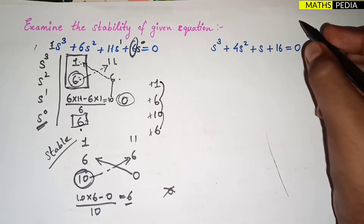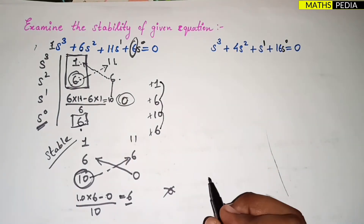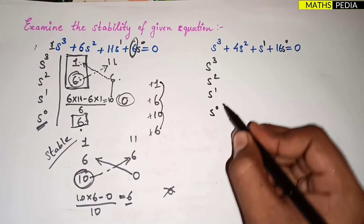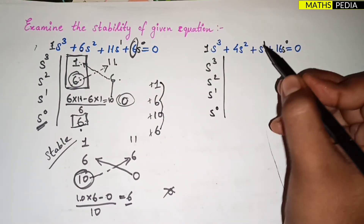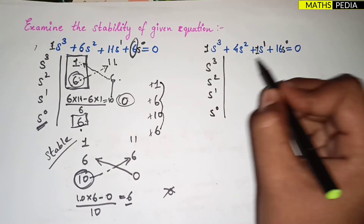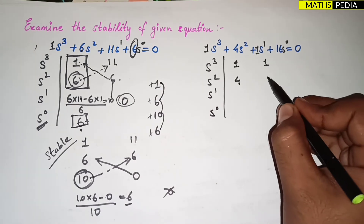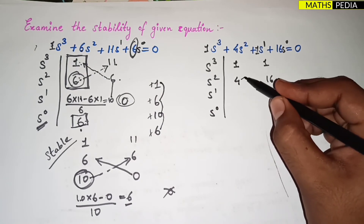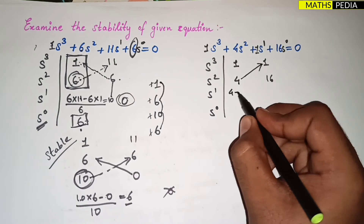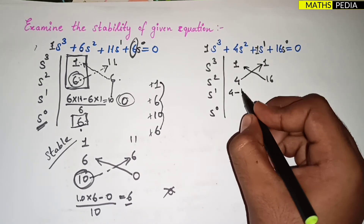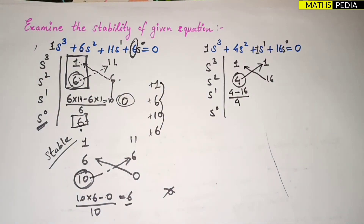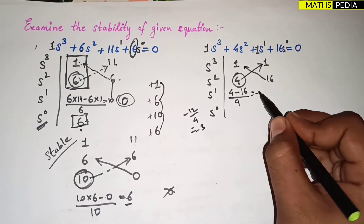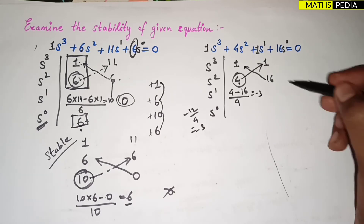Now for Problem 2: s³ + 4s² + s + 16 = 0. Again, highest power is s³, so list in descending order: s³, s², s¹, s⁰. Fill in the coefficients: 1, 4, 1, 16. To find the third row element: (4 × 1 − 16 × 1) / 4 = (4 − 16) / 4 = −12 / 4 = −3. The second element is 0.